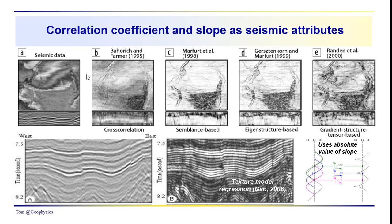Welcome back. We're returning to our discussion of the correlation coefficient and the slope as seismic attributes. Bohorich and Farmer, for example, make good use of the cross-correlation — they use inline and cross-line trace correlations to come up with a coherency volume. You can see they've nicely outlined some channeling here on a chronostratigraphic surface in the seismic volume.